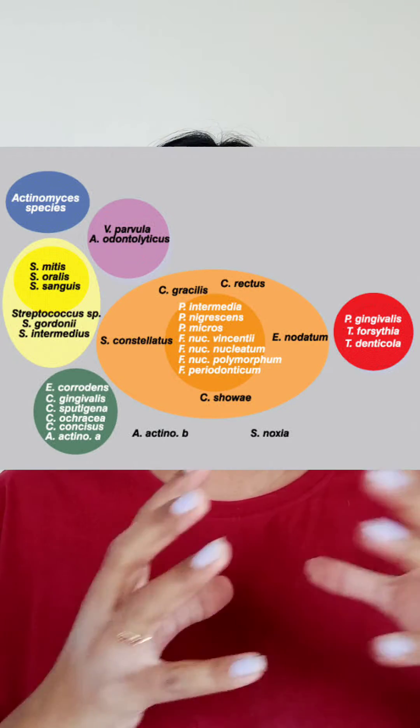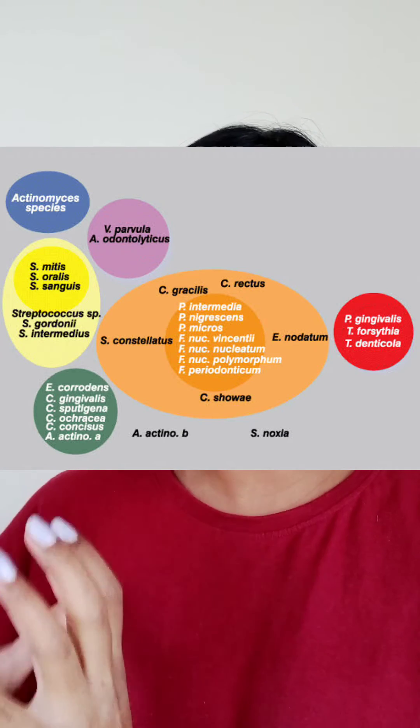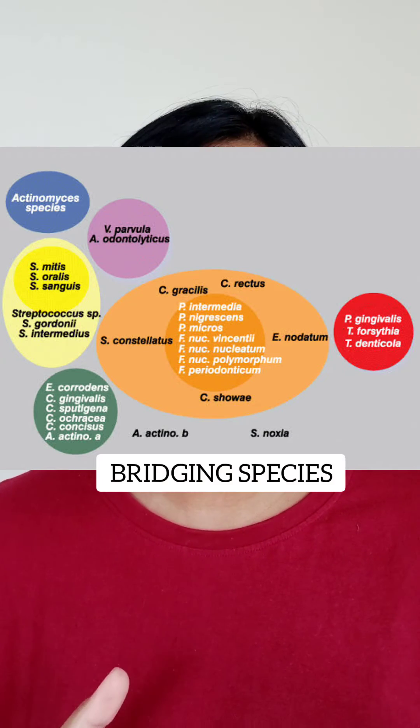A fun but not so fun fact is that the orange complex bacteria act as a bridge between the harmless complexes and the very harmful complex. And these are called the bridging species.